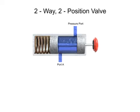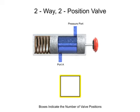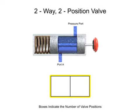To simplify fluid system drawings and schematics, all valves can be represented graphically. Boxes, sometimes called envelopes, are used to indicate the number of valve positions. Since this is a two-position valve, its graphic representation has two adjacent boxes.